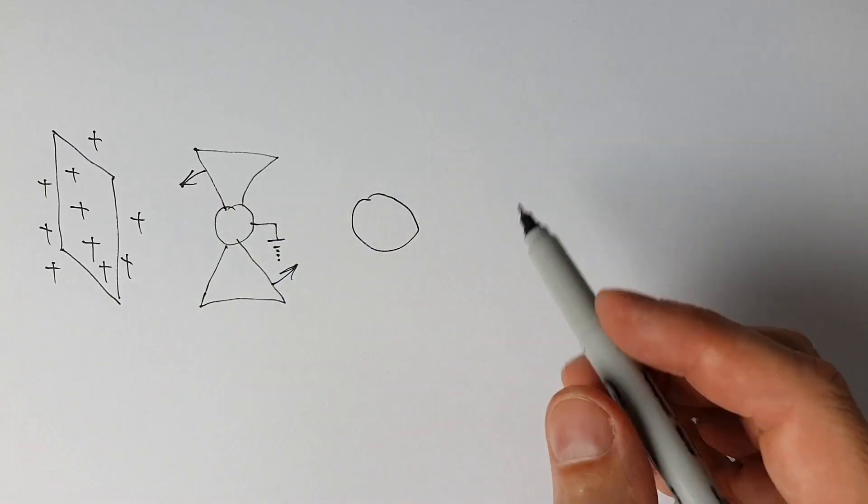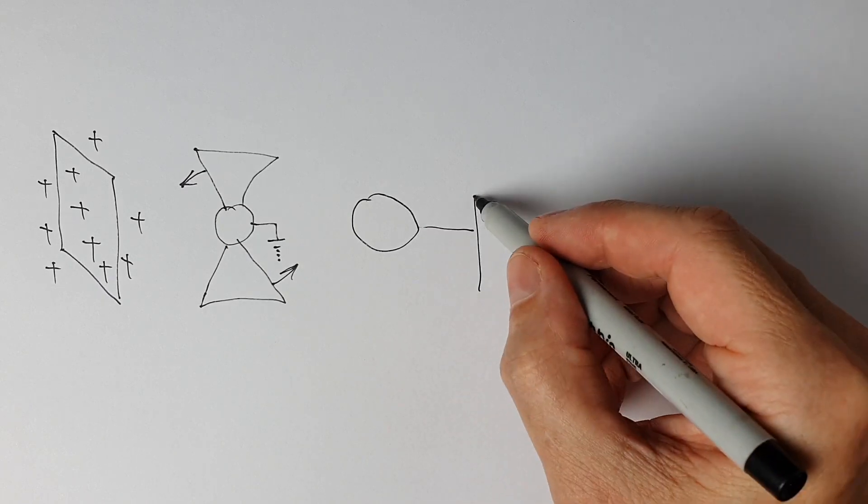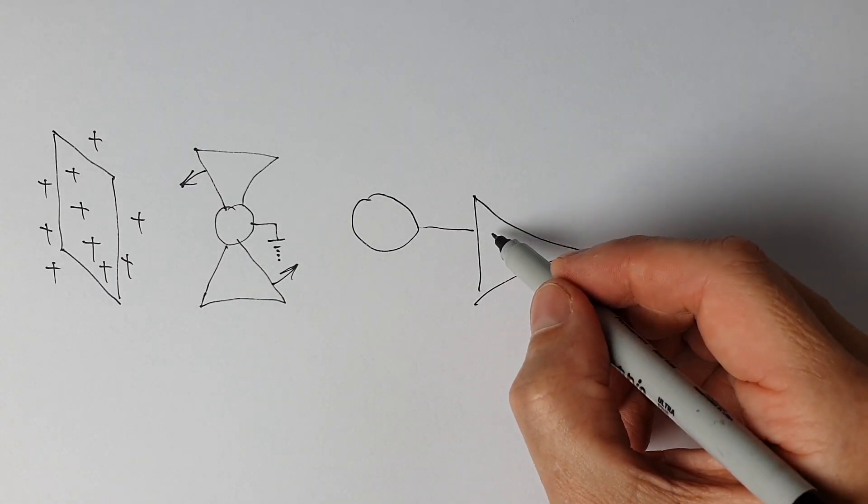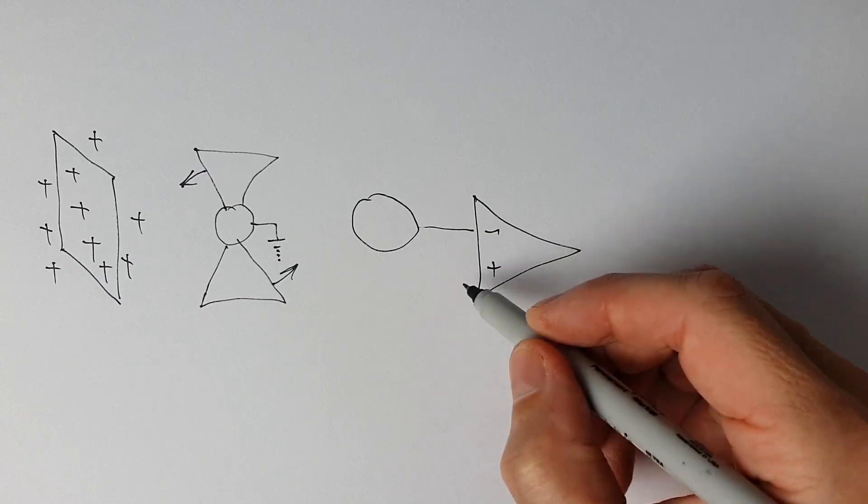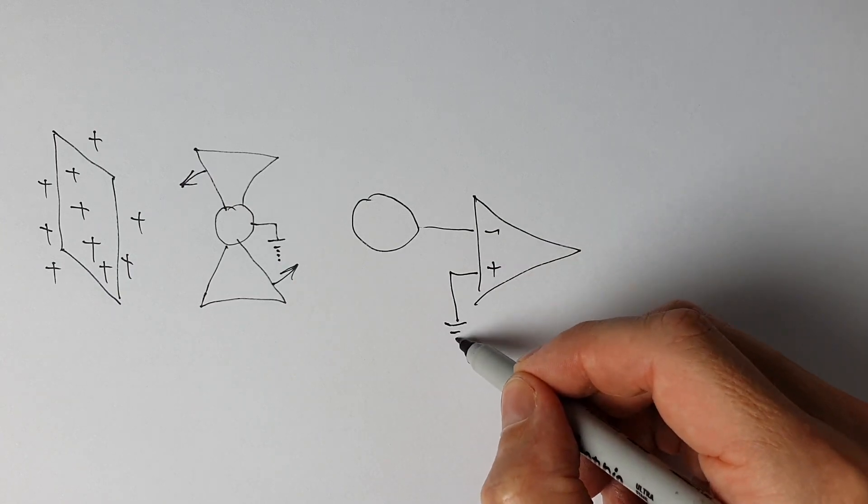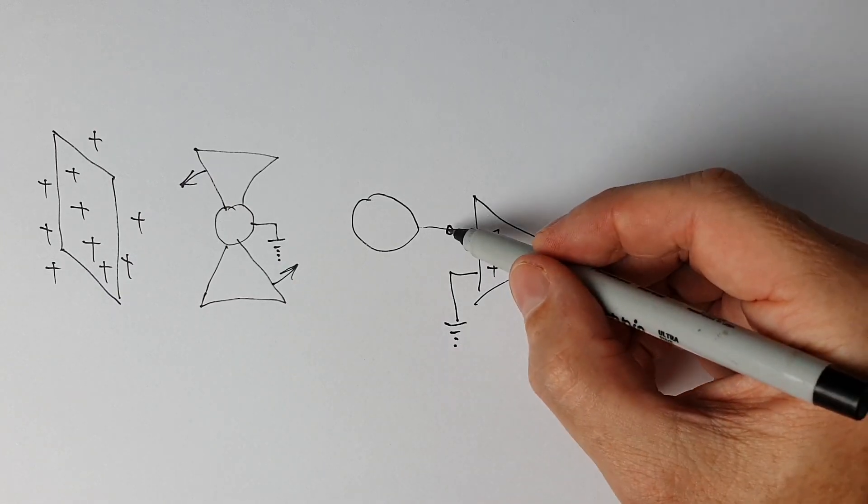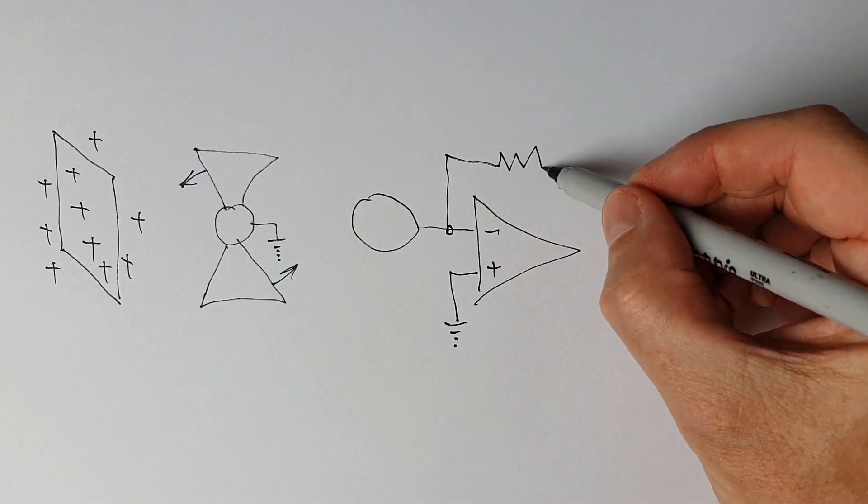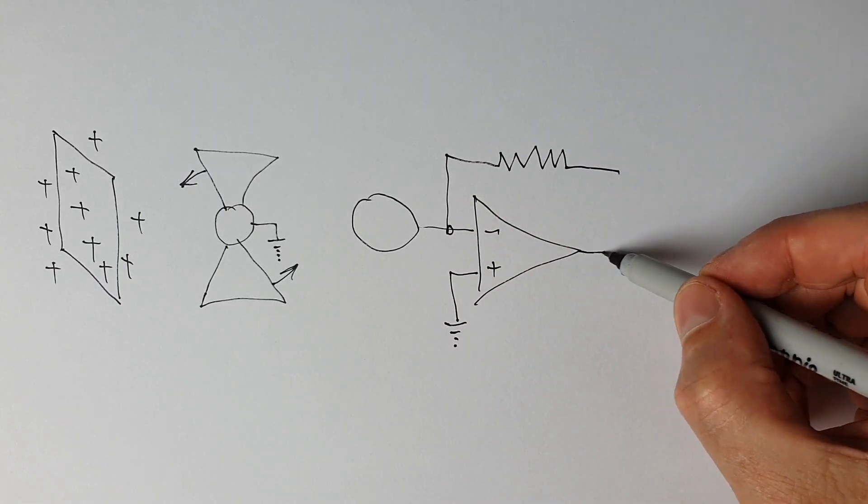Changing charge implies current. So the current then flows in and out of what we lovingly refer to as a trans-impedance amplifier. Trans-impedance amplifier converts a current into a voltage.